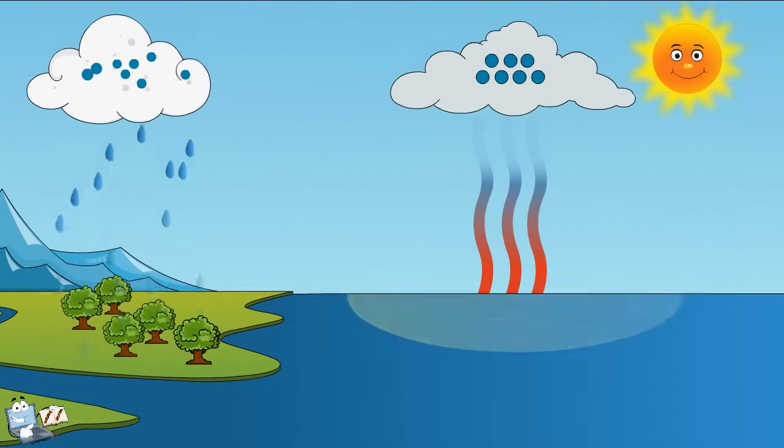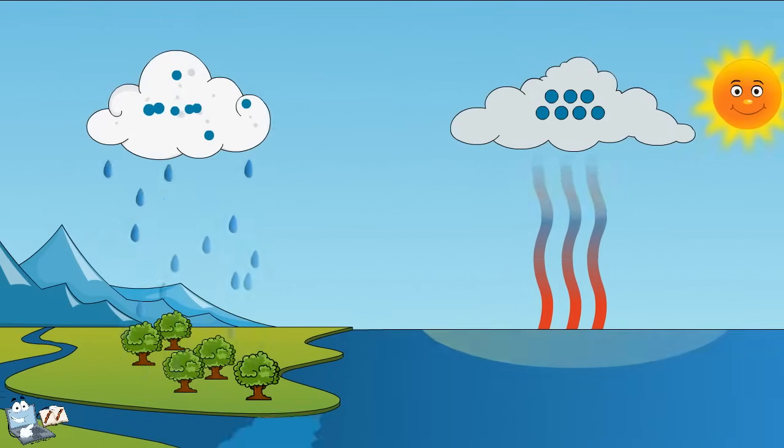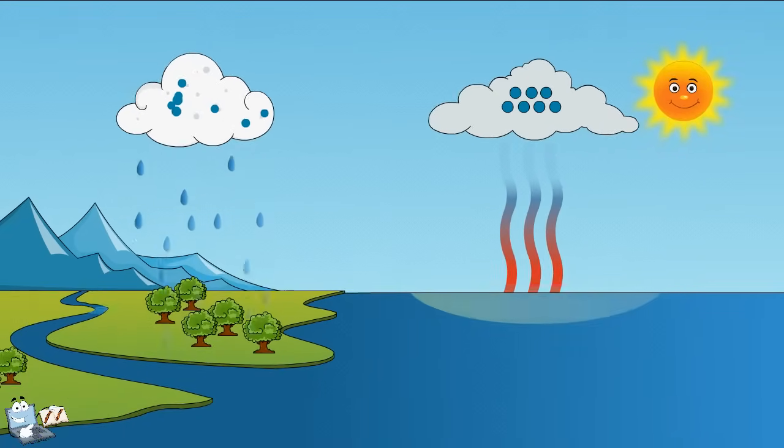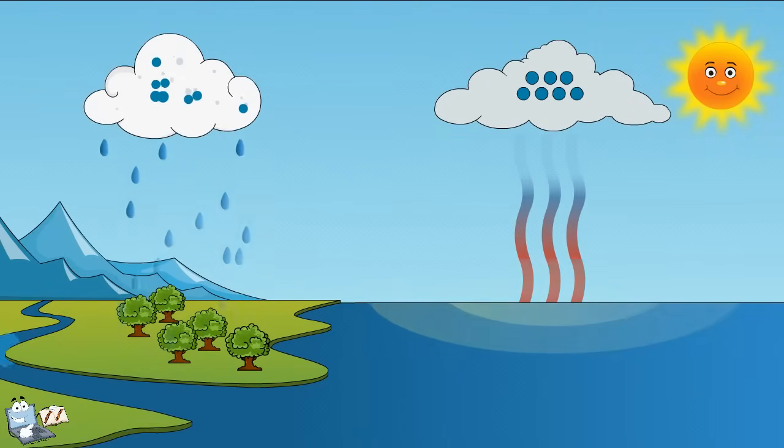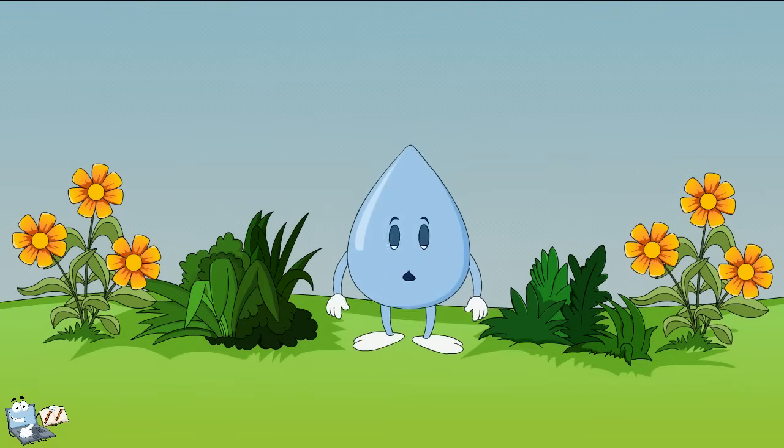This whole process is called a water cycle and keeps the water moving from the ground to the sky, fulfilling the water needs of the plants, animals, and people to survive. So now you know how raindrops form and fall.